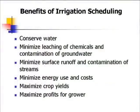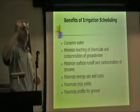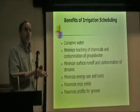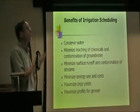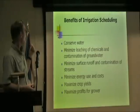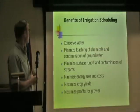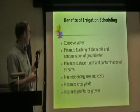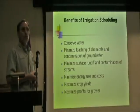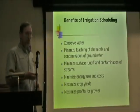Using an agricultural example of the benefits of ET: the primary application is irrigation scheduling. If we know ET, we know how much water the plants need, and then we can manage and schedule the water. The benefits of scheduling irrigation water include: conserving water, minimizing leaching of chemicals and groundwater contamination, minimizing surface runoff and stream contamination, minimizing energy use and cost, maximizing crop yields, and maximizing profits to farmers.